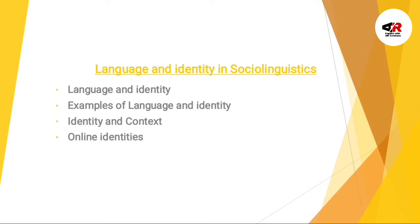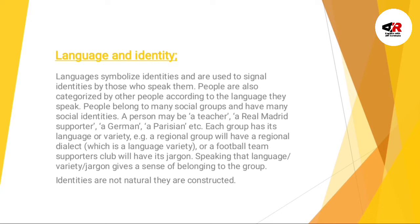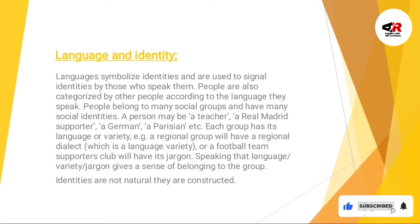Without wasting time, let's get started. Language and identity: ek shakhs ki kai identities ho sakti hai — each of which is more important at different points in time. For example, identity as a woman — kabhi wo maa hoti hai, kabhi kisi ki life partner hoti hai, kabhi office worker hoti hai. Logon ki jaise identity hoti hai, usi hisaab se wo apni language ko bhi represent kerti hai aur logon se interact bhi kerti hai.